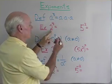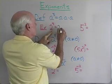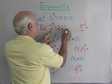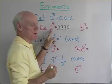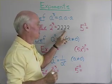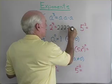So if I have 2 to the fourth power, I can use this definition to say this is going to be 2 times 2 times 2 times 2. And I multiply 2 times 2 is 4 times 2 is 8 times 2 is 16.